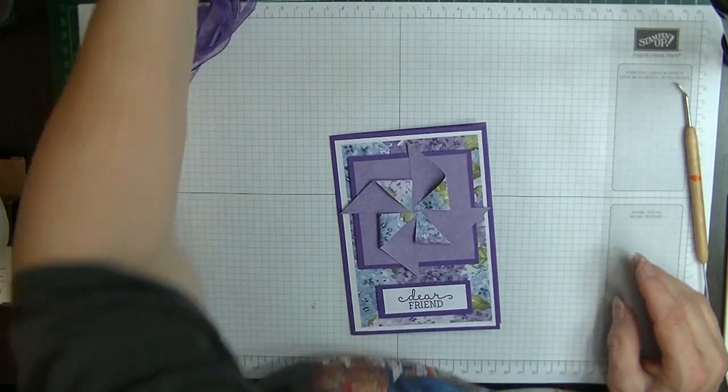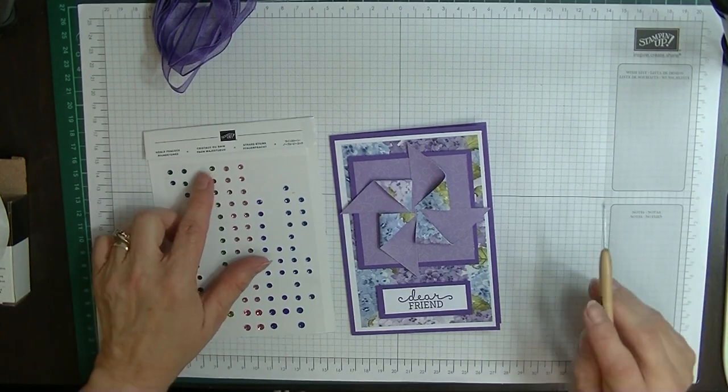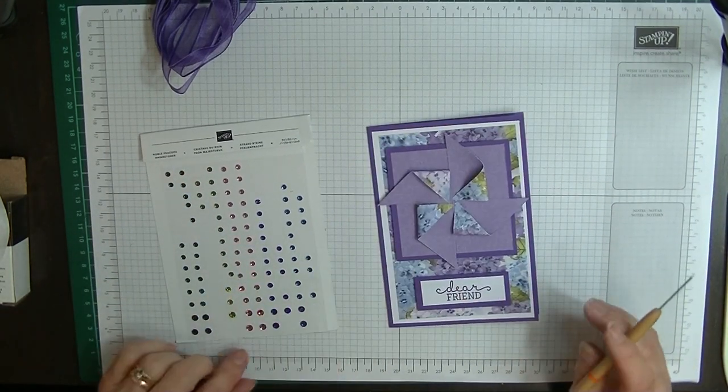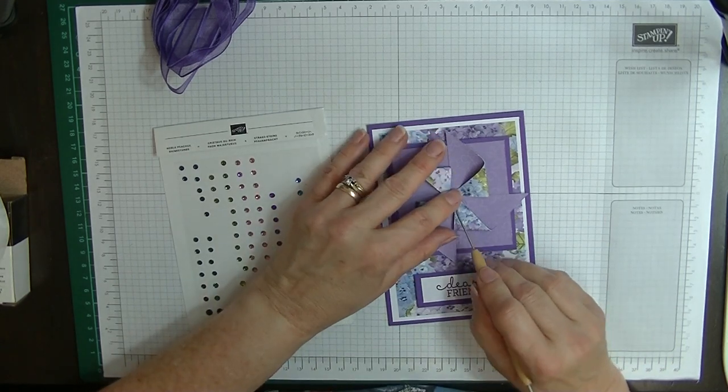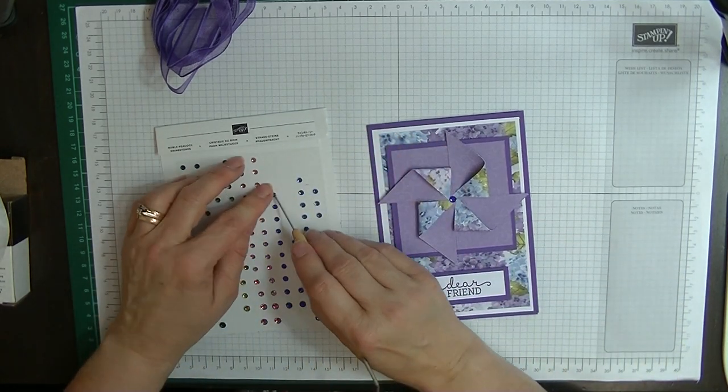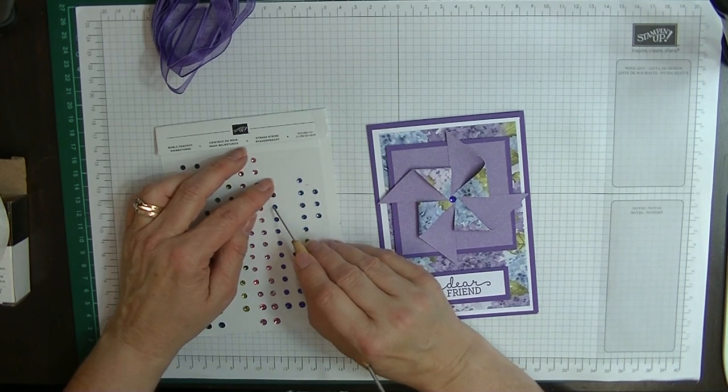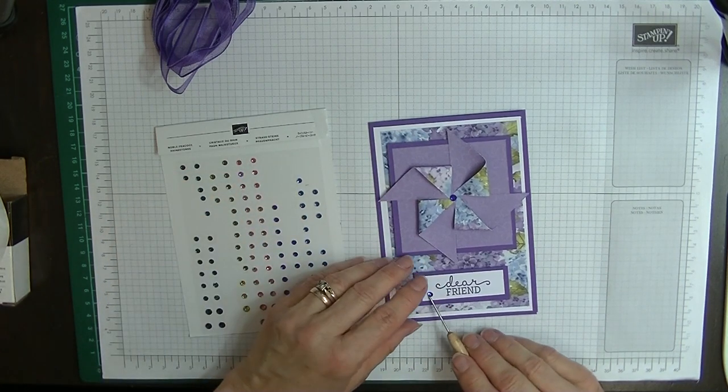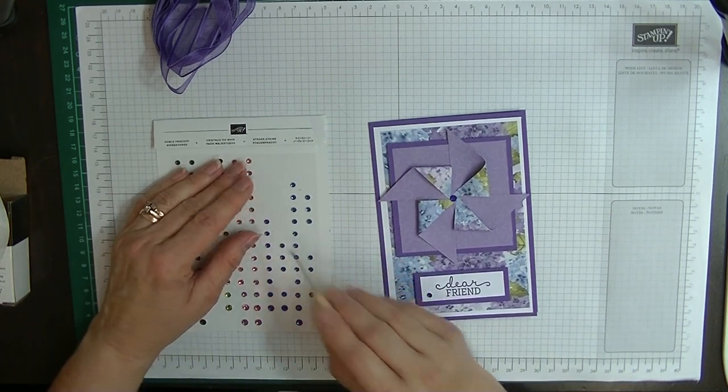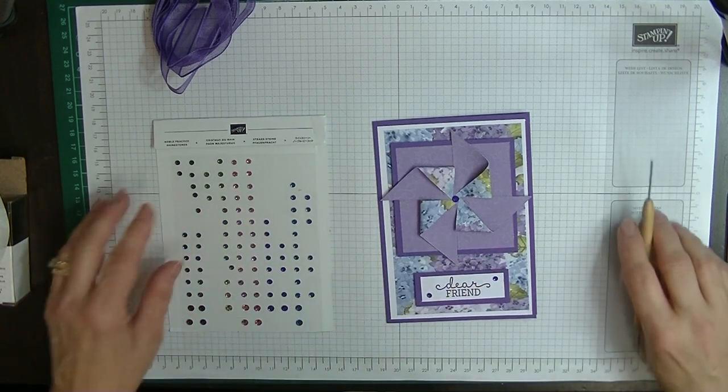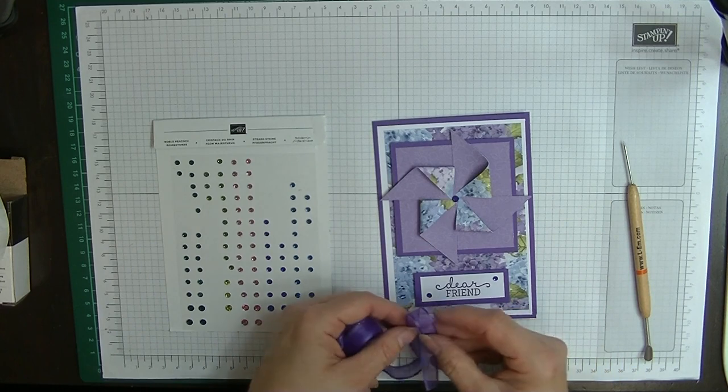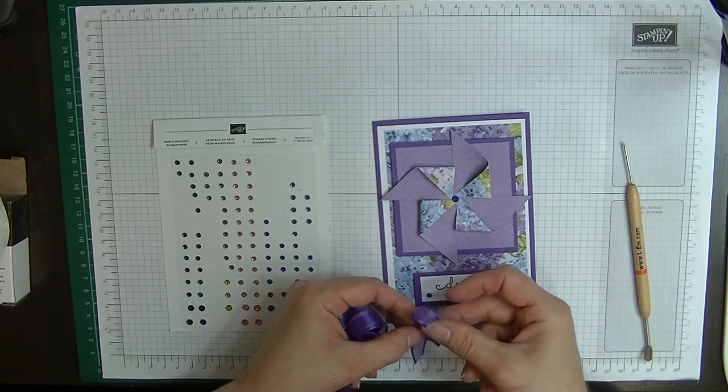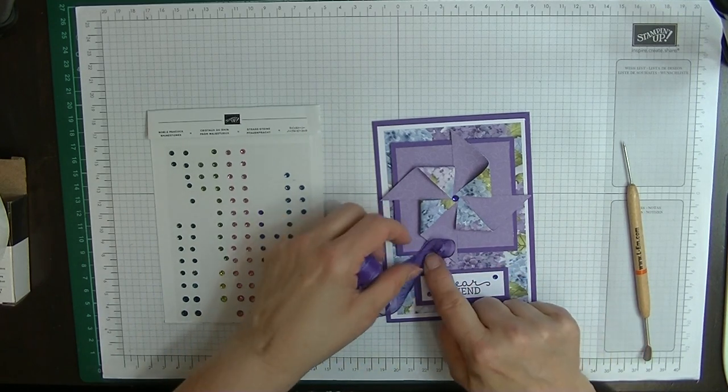Now it's just a matter of finishing off. I have some of these, these are actually from the Noble Peacock. I'm going to use one of these large ones here in the middle here and a couple of the smaller ones on my sentiment. I'm thinking I might put a bit of ribbon on here but I'm not sure.